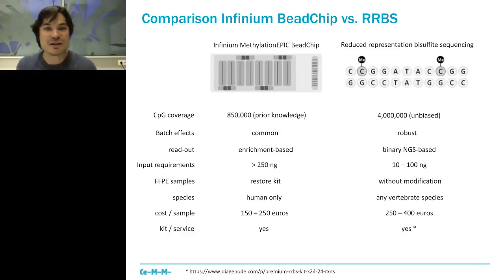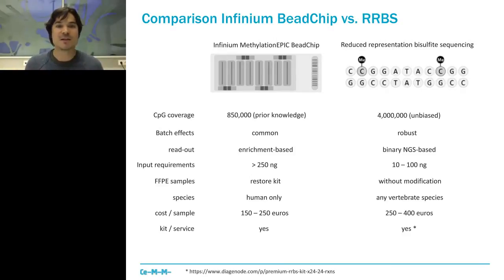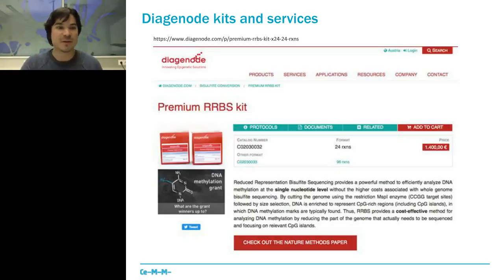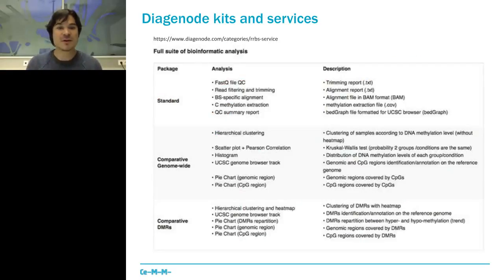If you're a clinician not planning to do library preps or data preprocessing yourself, there are solutions for RRBS similar to Infinium — you can get either a kit or a service. The Diagenote website sells the kit in both 24-reaction and 96-reaction formats. Libraries can be made in five days. You can also get the analysis as a service, with reports, differential methylation analysis, and interesting plots delivered directly.